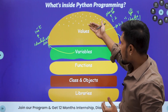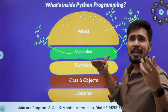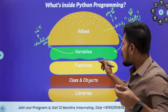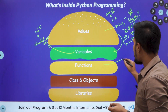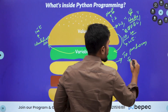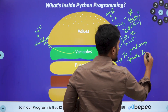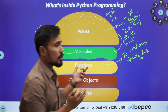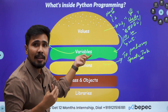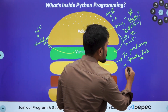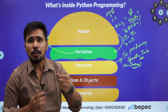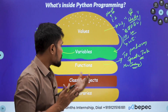After storing values inside a variable — for example, you collected 10 people's salaries and stored them inside a variable called 'salary' — now you want to perform a function. What is a function? A function is used to perform a specific task. So if I want to know the minimum salary from that data, 'minimum' is a function. The purpose of a function is to perform a specific task.